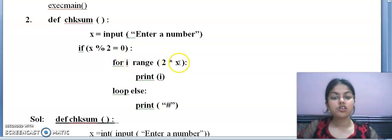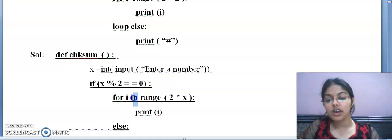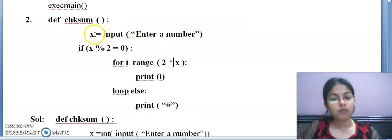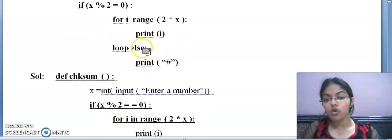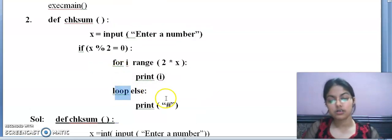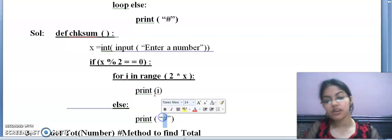Next statement. For i range 2 into x. You know the syntax of for loop. For i in range. So here what will come? In. In the range, 2 into x, this is not an error. We can write expressions here. Here the user will enter some value. Suppose they have entered 16, so 2 into 16 will be 32. It will display the value from 0 to 31. Print i, this is correct. After that, loop else. Loop else with for. With for only else comes. Loop word will not be there.